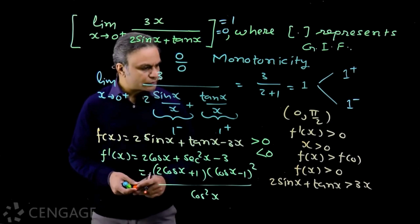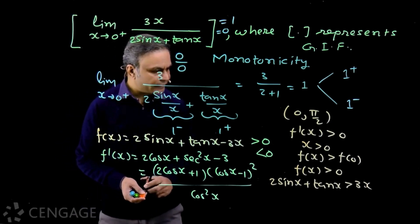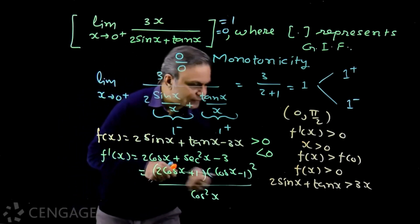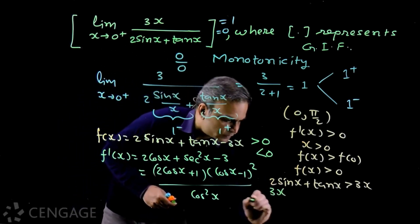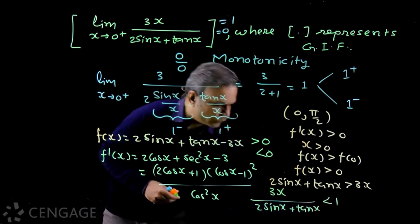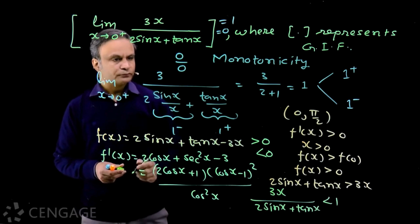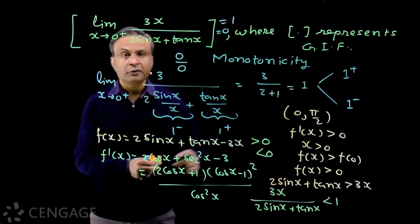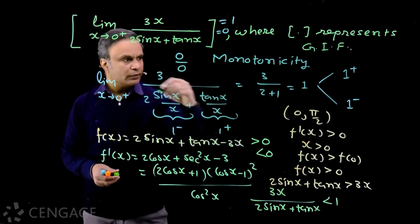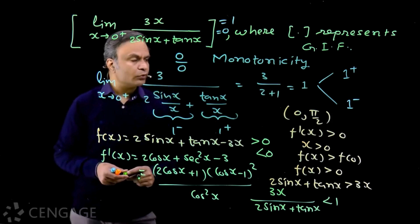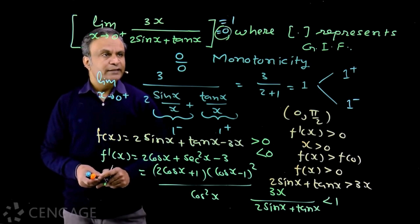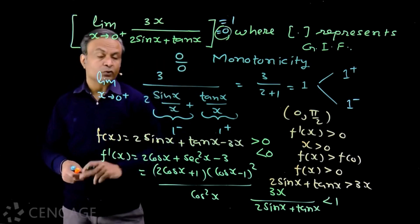f(0) = 0, so we find f(x) > 0. That means 2sinx + 10x > 3x. Now 2sinx + 10x is positive and 3x is positive, so we can divide both sides without altering the sign of the inequality. We find that 3x/(2sinx + 10x) < 1. So this limiting value will be 1−, and therefore the greatest integer less than or equal to this limiting value is 0, not 1.